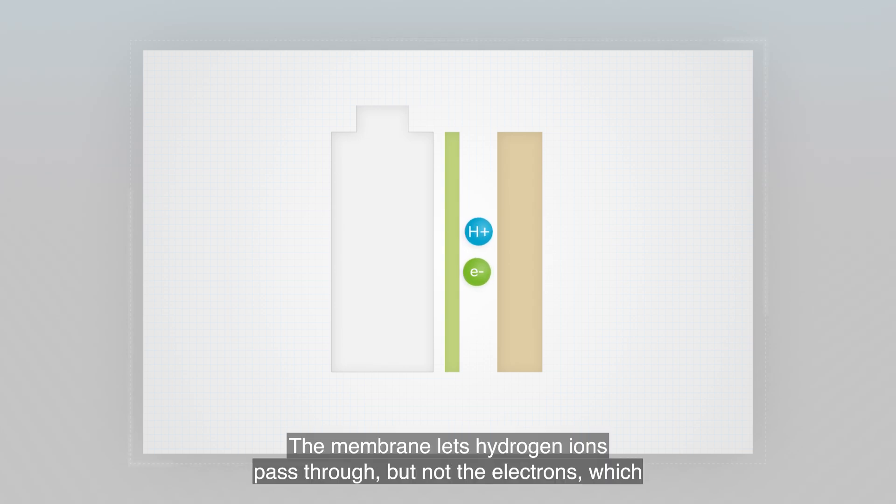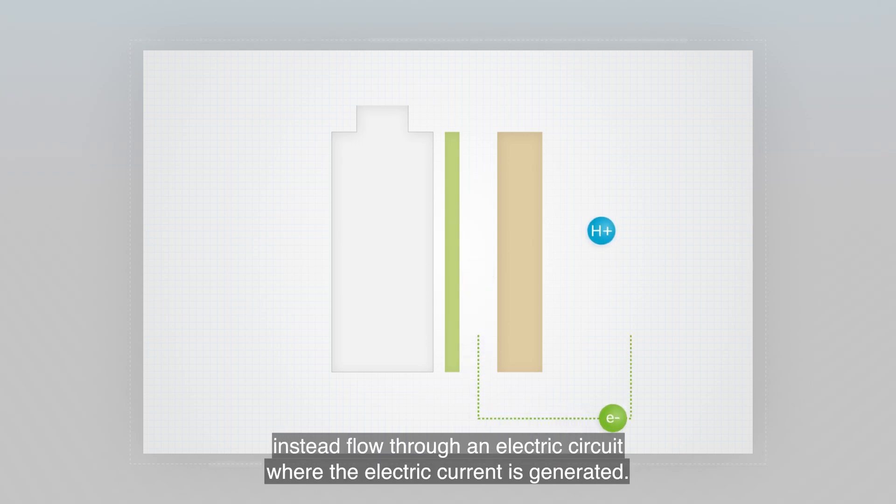The membrane lets hydrogen ions pass through but not the electrons, which instead flow through an electric circuit where the electric current is generated.